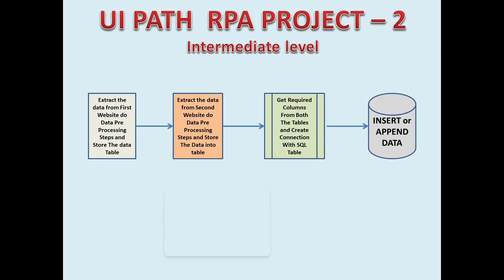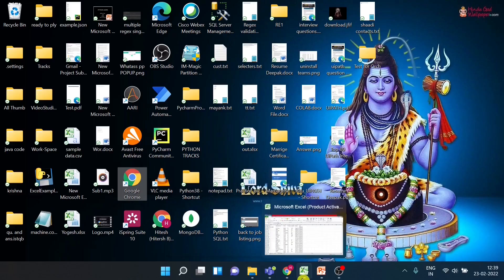This is the linear explanation of the entire project. First, using UiPath we extract the data from the first website. The second step is extracting data from another website, and the next step is to insert the data into the data table. Let me show you the websites now.